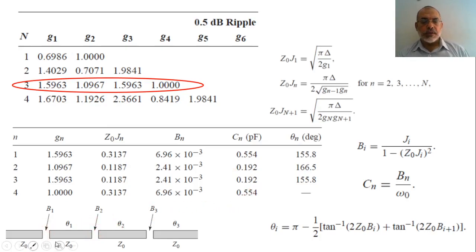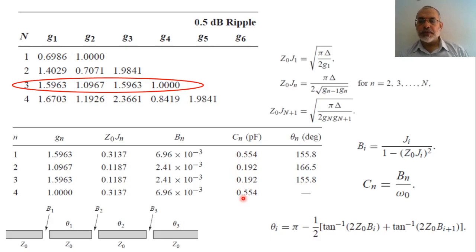This required capacitance can be obtained by adjusting the spacing delta between the transmission line sections. There is a relation between the value of the capacitance and the gap between the two transmission line sections. Using these formulas, we can find the required distances delta_1, delta_2, delta_3, and so on. From the values of B, we can also obtain the value of theta_i.